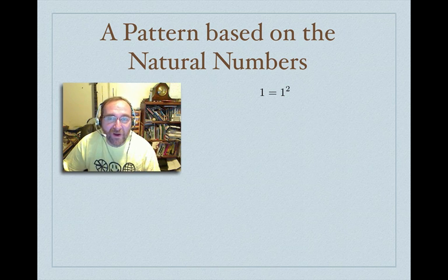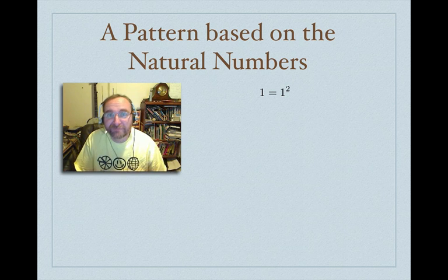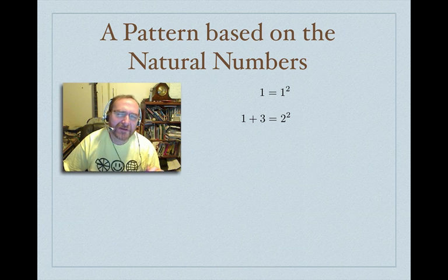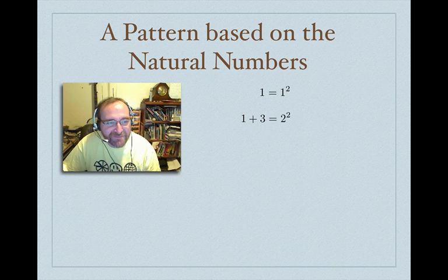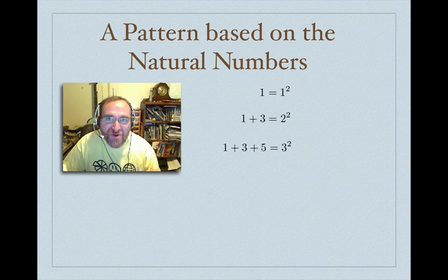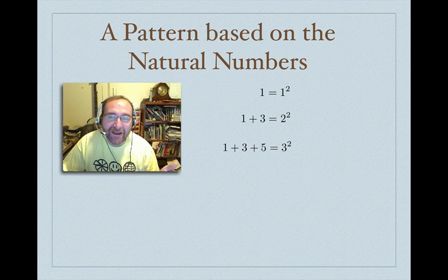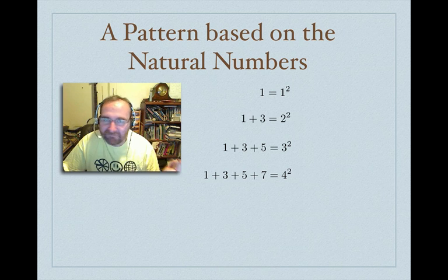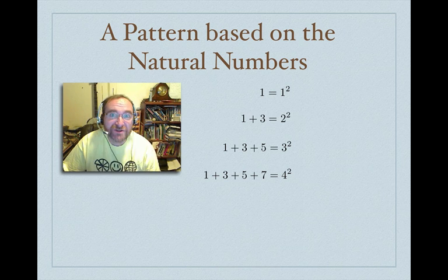Notice that if you take 1, it equals 1 squared, and 1 is an odd number — not unusual, but in the sense that 2 doesn't divide it. If you add another odd number: 1 plus 3 equals 4, which is 2 squared. Add the third odd number: 4 plus 5 is 9, which is 3 squared. Add one more odd number and you get 16, which is 4 squared. See the pattern?